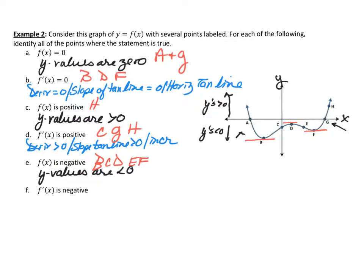Finally, f'(x) is negative means the derivative is less than zero, so the slope of the tangent lines is less than zero — the function is decreasing. Where is this function decreasing? It's decreasing where a is and where e is, so the answer for this last one is a and e. Hope you're having a great day!